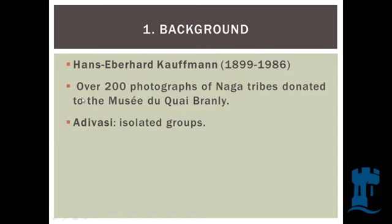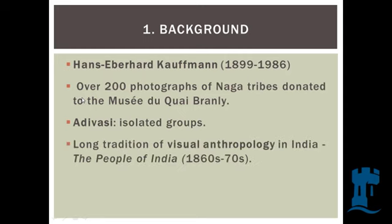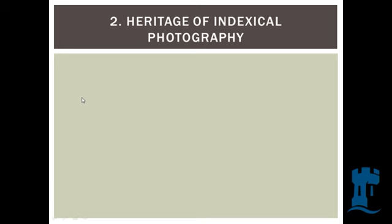The Naga tribes are part of the Adivasi, which is the accepted Indian word for a number of isolated tribes within the Indian subcontinent who are protected by the Indian constitution. They are typically isolated groups with their own language, their own rituals, their own societal structures, and they live very separately from the main population — and that's why they're of particular interest to anthropologists. There is a long tradition of visual anthropology in India, starting most strikingly with a body of photographs called the People of India, which I'm going to tell you about in a moment.